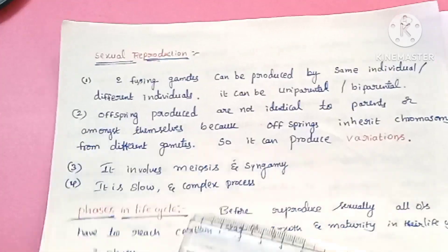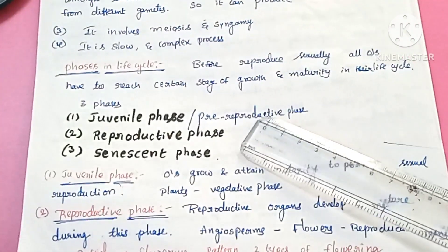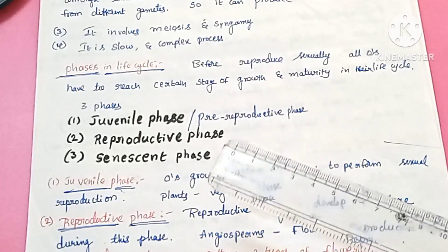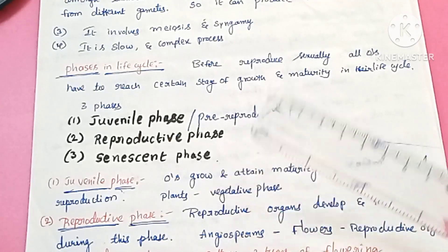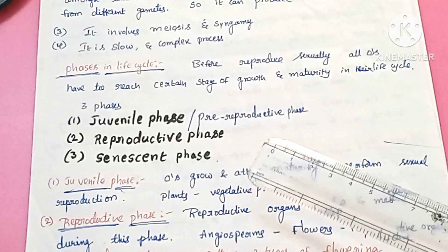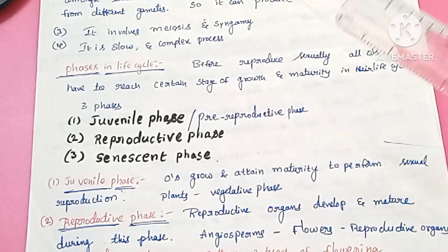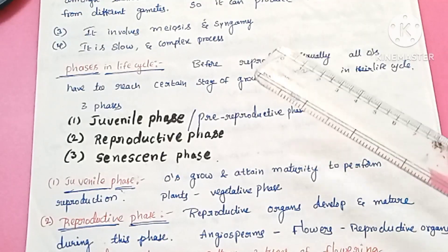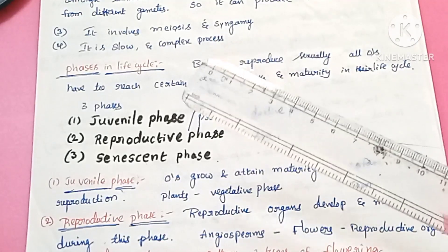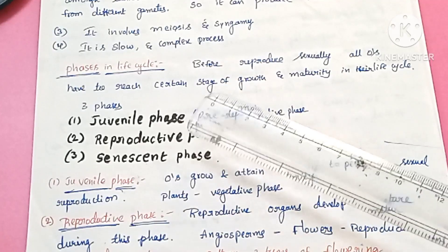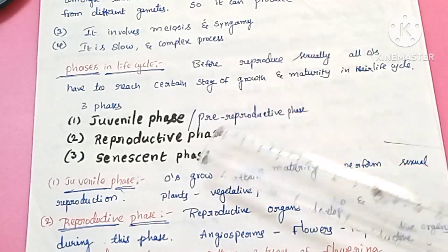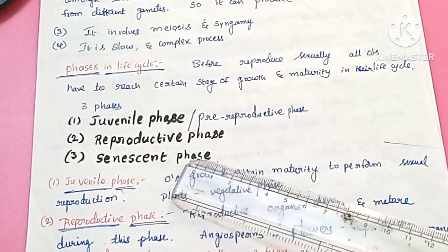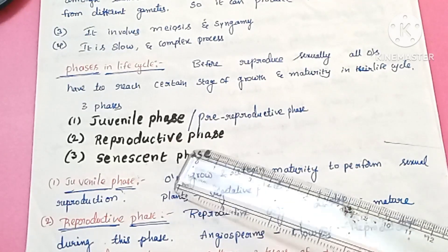Before reproducing sexually, all organisms have to reach a certain stage of growth and maturity in their life cycle. There are three phases in a sexually reproducing organism's life cycle: the juvenile phase (or pre-reproductive phase), the reproductive phase, and the senescent phase.